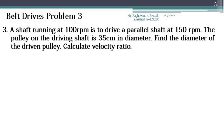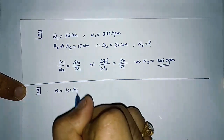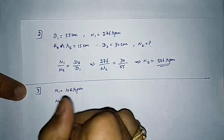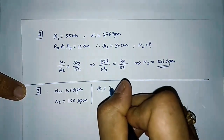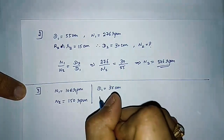Now we will move on to the next problem. Problem 3: a shaft running at 100 rpm is to drive a parallel shaft at 150 rpm. The pulley on the driving shaft is 35 cm in diameter. Find the diameter of the driven pulley and calculate the velocity ratio. So n1 is equal to 100 rpm and n2 is equal to 150 rpm. d1 is given as 35 cm, also equal to 350 mm. d2 is unknown.